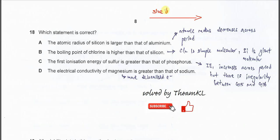Therefore, across the period, size decreases. Silicon is group 14 and aluminum is group 13. Aluminum should be larger than silicon. Therefore, A is wrong.